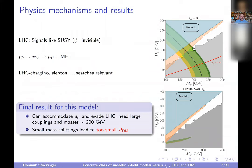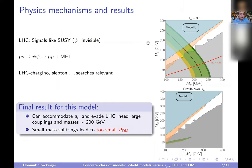To summarize this model: you can accommodate g-2 and evade LHC with large couplings and small masses. The model can in principle explain the g-2 value, but in the region where you explain it the dark matter relic density is too small. You would need other dark matter candidates on top of this; you cannot explain everything simultaneously. This is a general statement from the general analysis, not just restricted to this particular example.